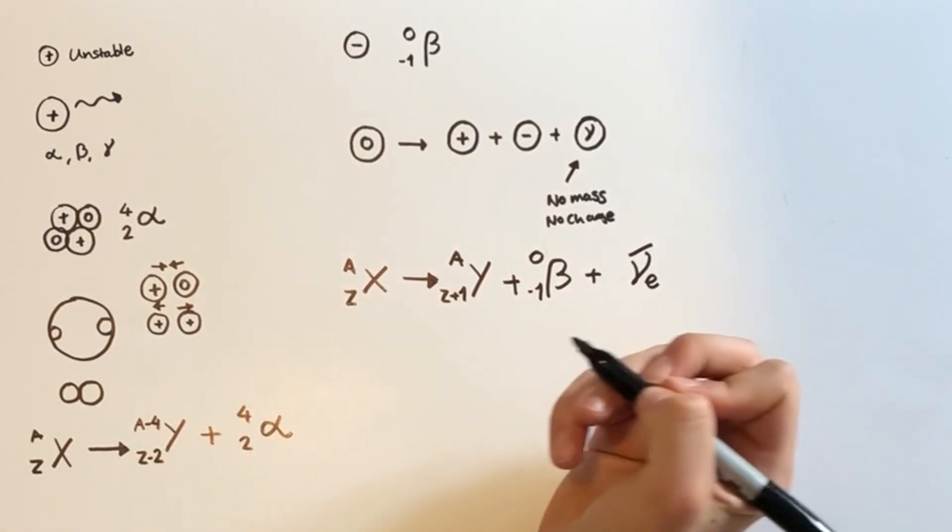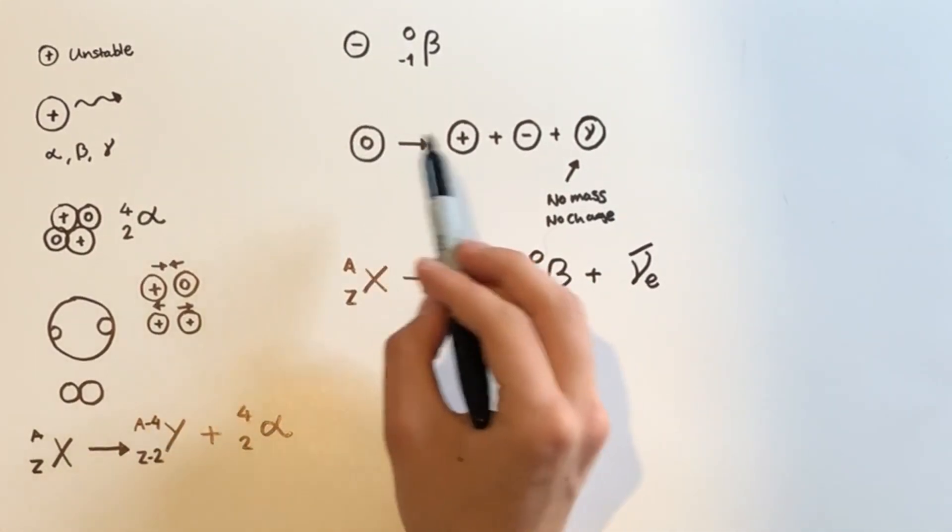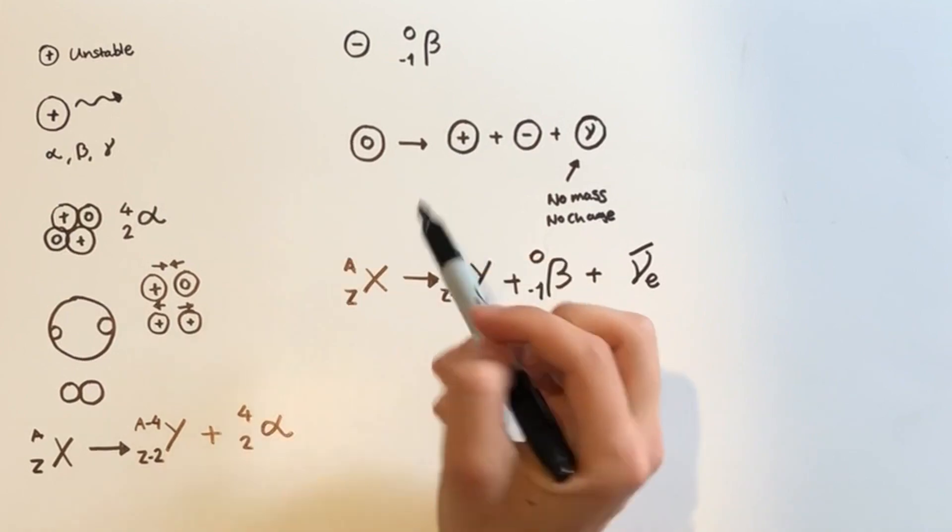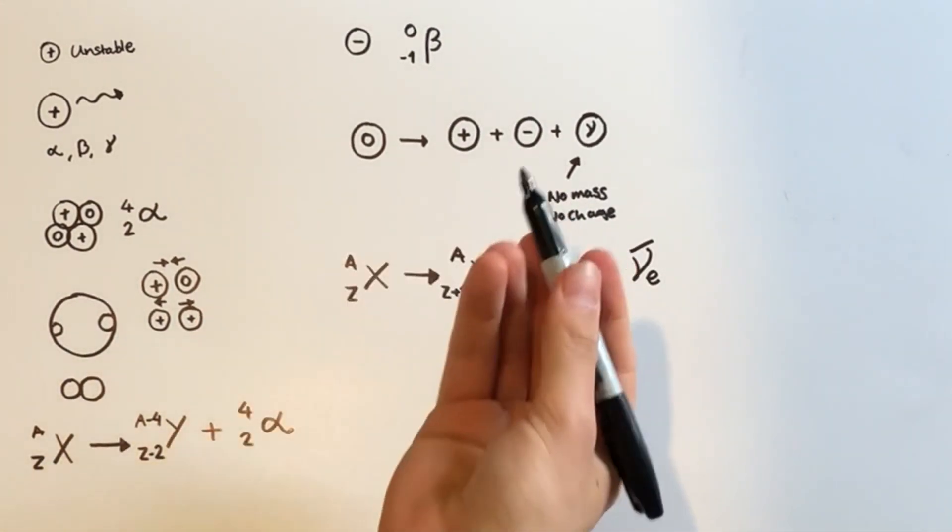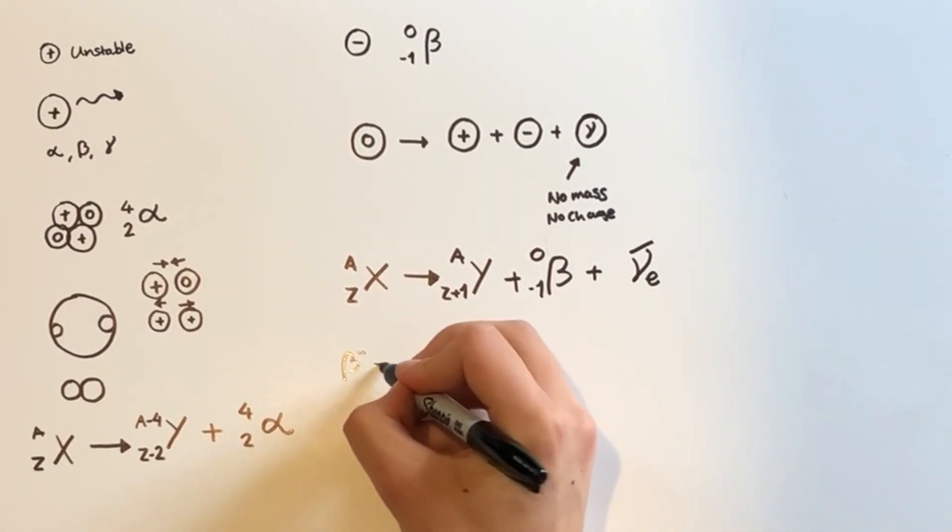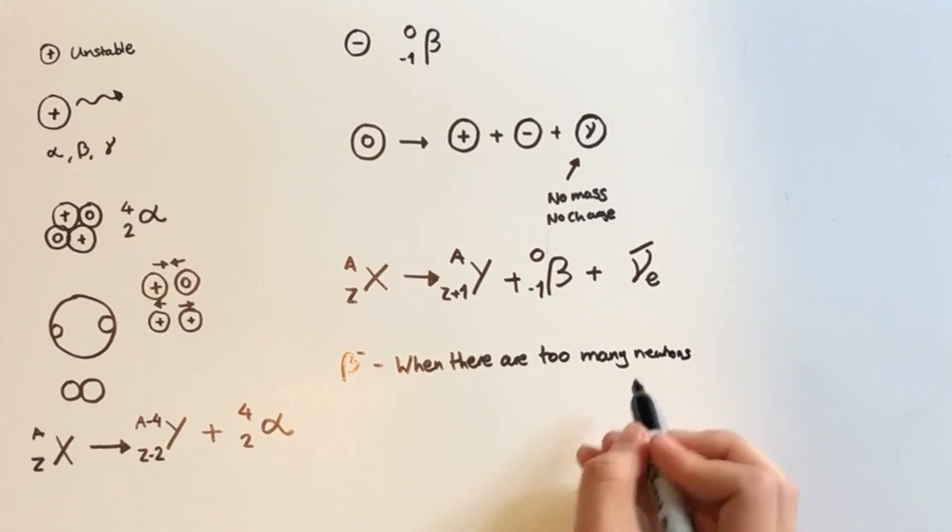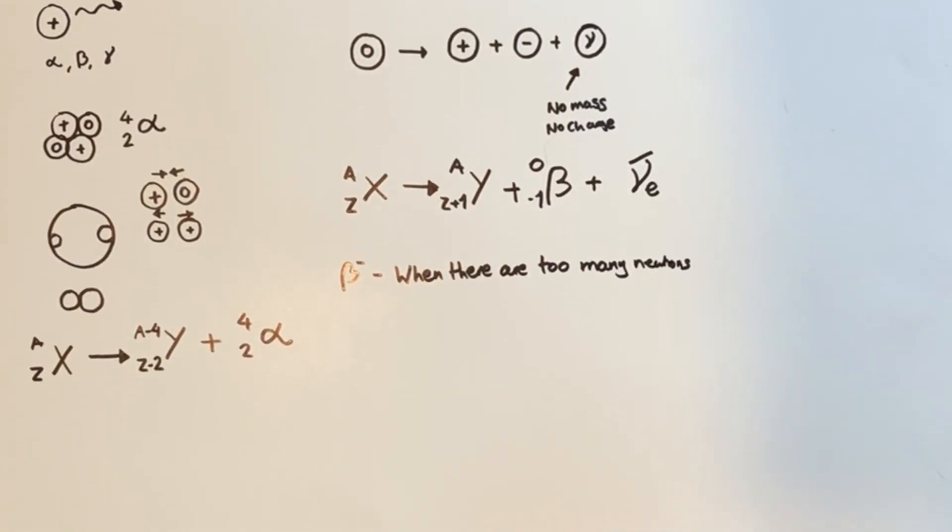That is going to decay to the daughter nucleus, which now is actually going to have the same nucleon number. But of course, if a neutron changes into a proton, then you're going to get an extra proton in this nucleus. So the proton number of this daughter nucleus increases by one, and you're going to get the beta particle and this antineutrino. So when do we get beta reactions occurring? Basically, a neutron is changing into a proton. But why would it have to do that? It would only do that if there are too many neutrons in a nucleus. So we get beta minus decay when there are too many neutrons in an atom's nucleus.